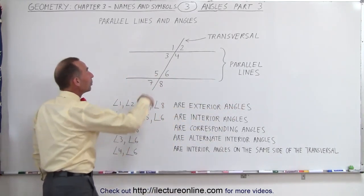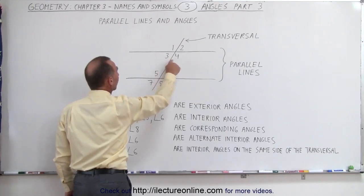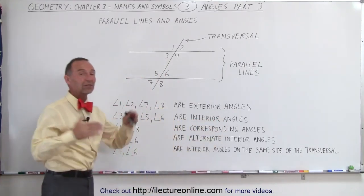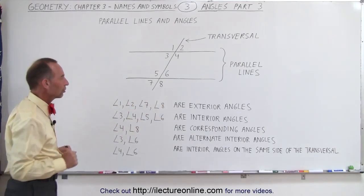Then the angles in between the two parallel lines, three, four, five, and six, those are called interior angles. So we have the exterior angles and the interior angles.